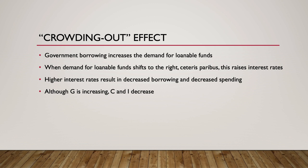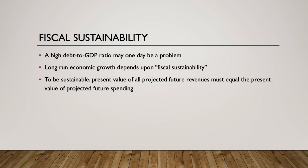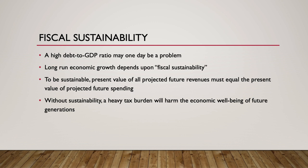The crowding out effect is less pronounced during deep recessions or when government expenditures are used for public investment that results in long-run economic growth. Some economists argue that we should be concerned about the size of the national debt because long-run economic growth depends upon the fiscal sustainability of the federal budget. For a budget to be fiscally sustainable, the present value of all projected future revenues must equal the present value of projected future spending. If not, then future generations will end up paying for the spending of the current generation, causing intergenerational inequalities from heavy tax burdens that are passed down through time. This wraps up the lecture on fiscal policy and debt.